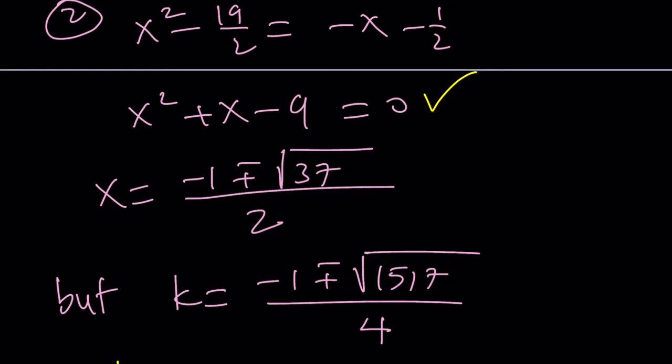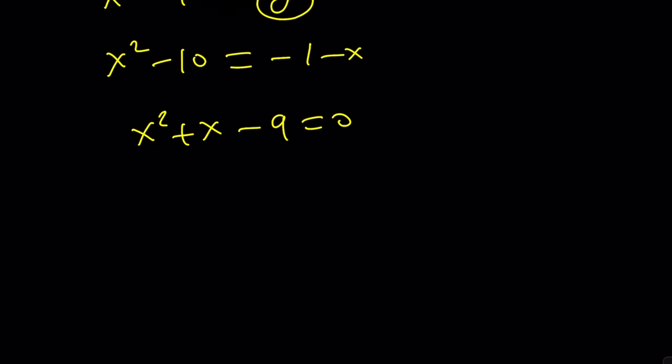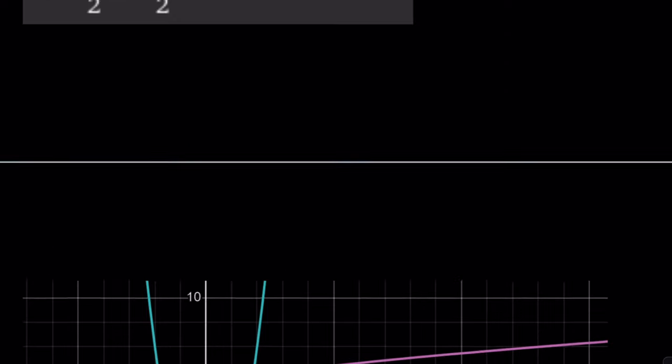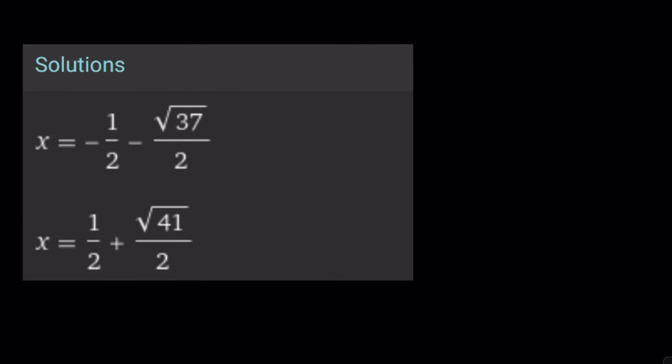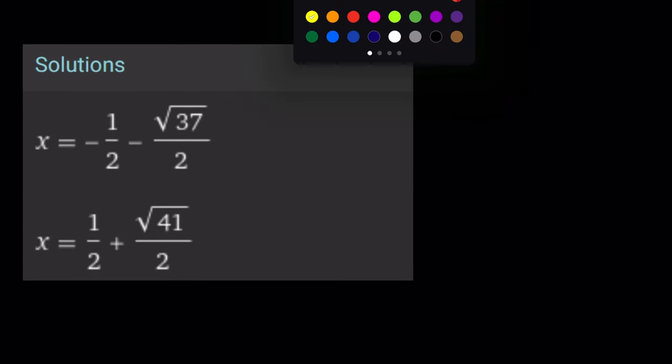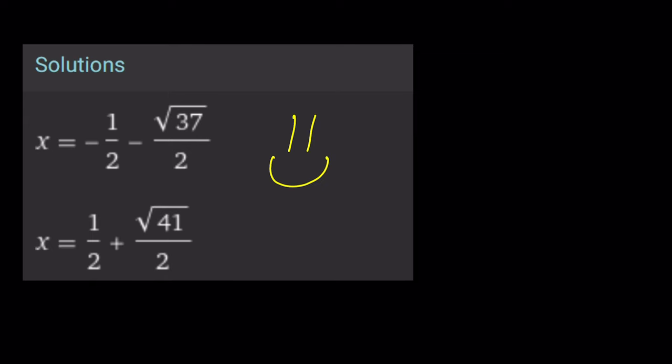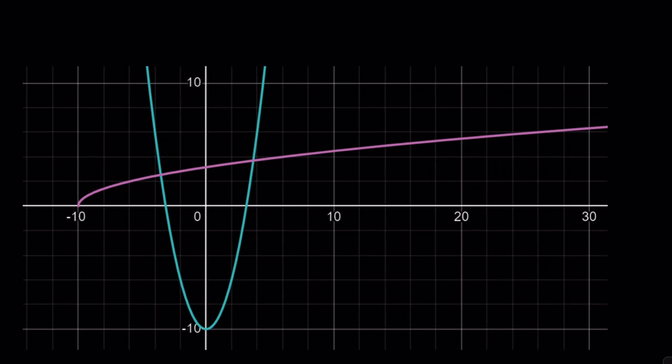So there should be four solutions, right? Let's take a look. Uh-oh. So why do we have two solutions? Or if you look at the graph, why are there only two intersection points? The reason behind that is the radical. This needs to be greater than or equal to zero.